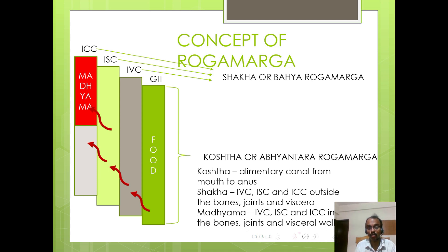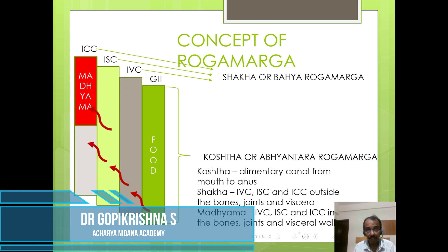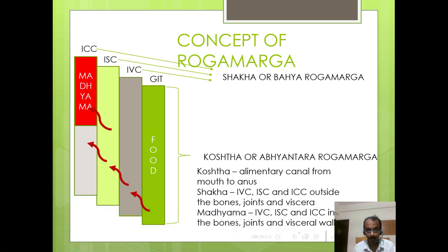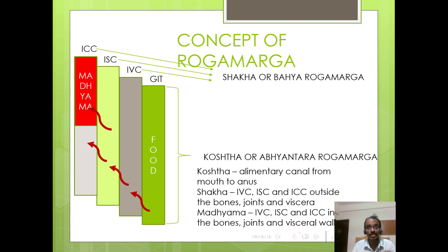From the Ayurveda point of view, we can compartmentalize these different informations. For example, the Koshtha refers to the alimentary canal, the part extending from mouth to anus. This is one of the major Roga Margas, also considered as Abhyantara Roga Marga — where disease manifestation commences due to abnormal functions of the digestive fire. That is the initiating point for disease manifestation.